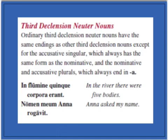The first variation that we're going to learn is Third Declension Neuter Nouns. These will be very similar to the difference between Second Declension Masculine and Second Declension Neuter, where you'll see an A in the nominative and accusative plural.